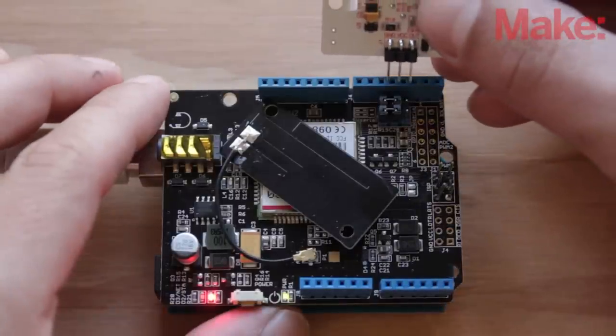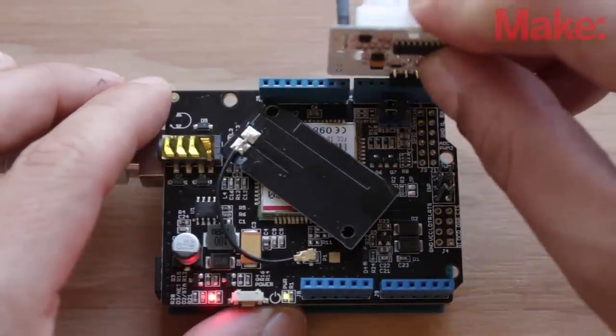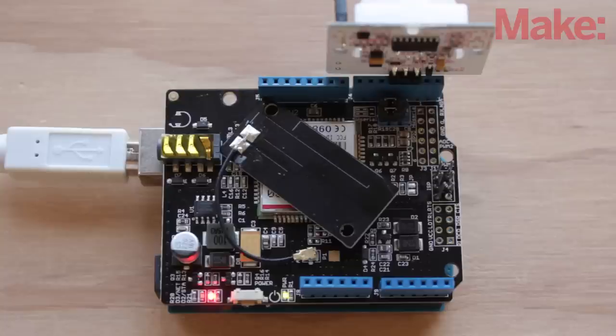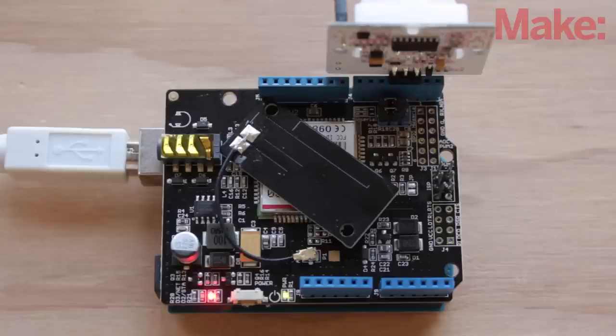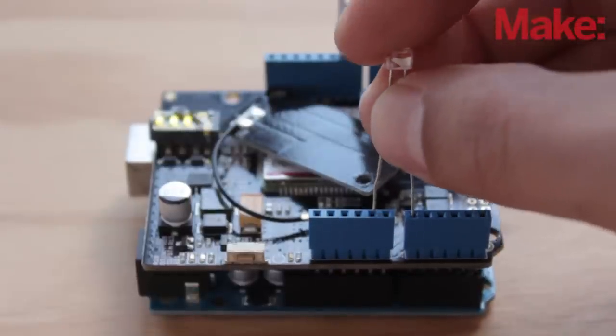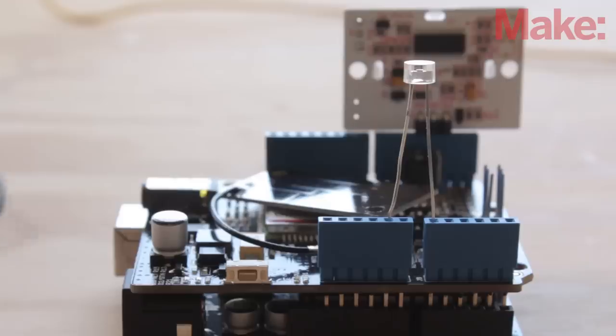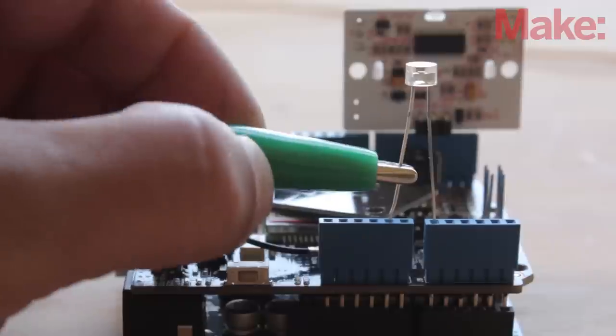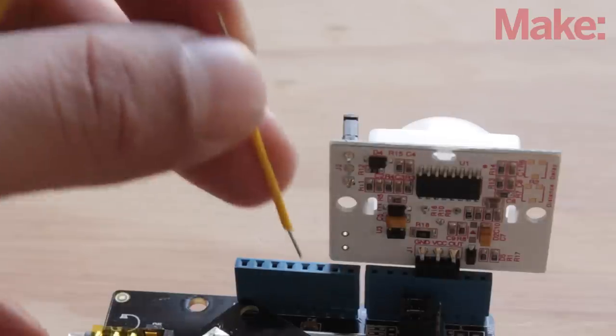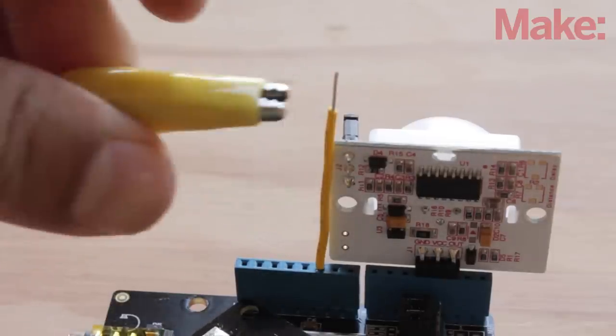Now, it's time to wire up the sensors. Start by plugging in the PIR motion sensor to the end of the shield, with the output connected to pin 2, VCC connected to pin 3, and ground connected to pin 4. Next, add the light sensor by connecting the short leg to ground, and the long leg to A0. Now, connect one of the contact switch alligator clips to the ground leg of the light sensor, and the other alligator clip to a small piece of wire inserted into pin 10.